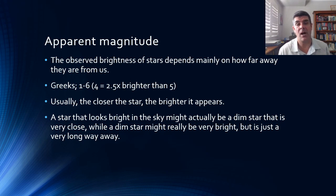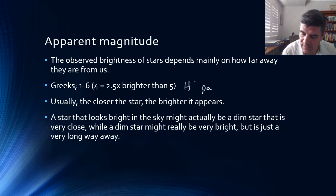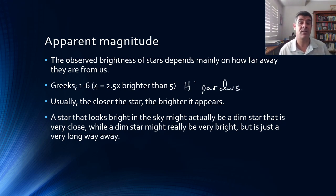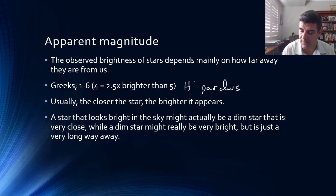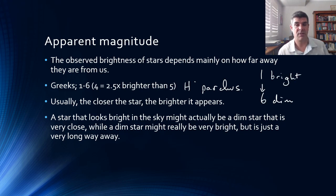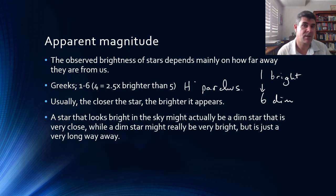Apparent magnitude is a very old concept. In fact, it dates back to the Greek philosopher Hipparchus, who devised a six-point scale based on how bright stars appeared to him in the night sky. The brightest stars were given a classification of one, down to six, which were the most dim. This scale is roughly a 2.5 scale, so about one difference in this scale is about 2.5 times of brightness.